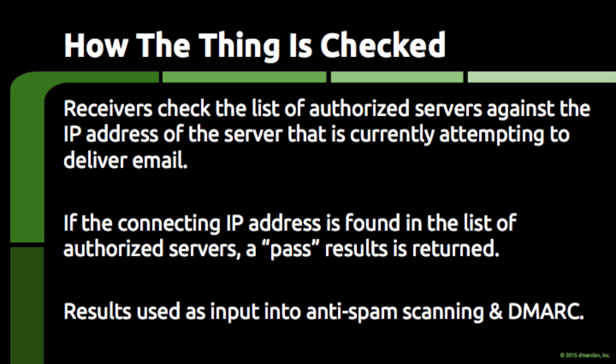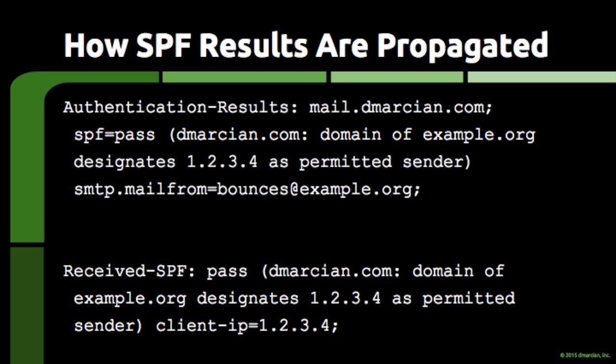Whatever we call it, the receiving server inspects it, extracts the domain from the email address, and then uses the DNS to query for text resources related to the domain. The text resources are then inspected to see if any of them are SPF records. If one is found, the receiving server will check to see if the sender is listed as being authorized by the SPF record. The link that SPF establishes between a domain and a piece of email is then used as input into things like anti-spam scanning, and more importantly, as input into DMARC-based checks. Whether or not a link is identified, the result of the SPF check is inserted into the email as part of the authentication results header, and less commonly, as the received SPF header.